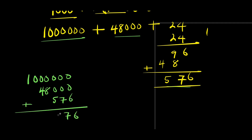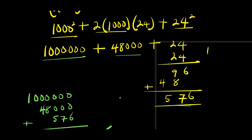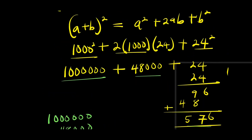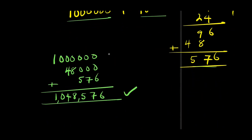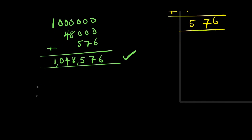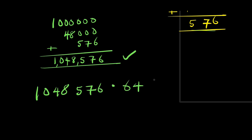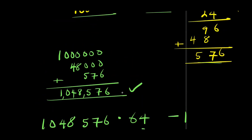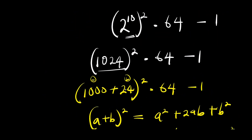The sum of all these gives us 1,048,576. That is the value of 1024 squared. Then we need to multiply that by 64 and subtract 1. So we have 1,048,576 times 64, minus 1.